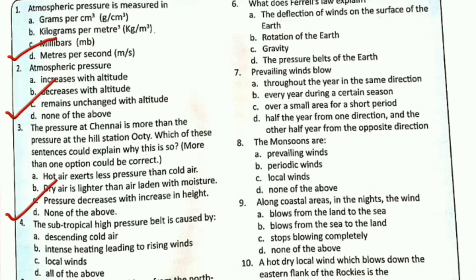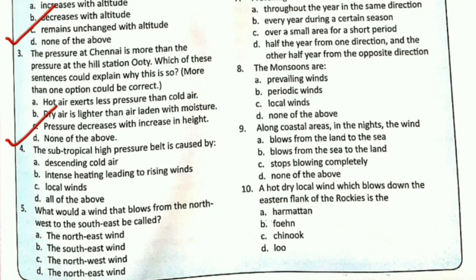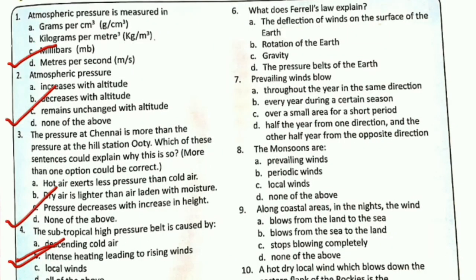Fourth: the subtropical high pressure belt is caused by — answer: descending cold air. Correct option A. Fifth: a wind that blows from the northwest to the southeast is called — answer: northwest wind. Correct option C. Sixth: what does Ferrell's law explain? Answer: the deflection of wind on the surface of the earth. Correct option A.